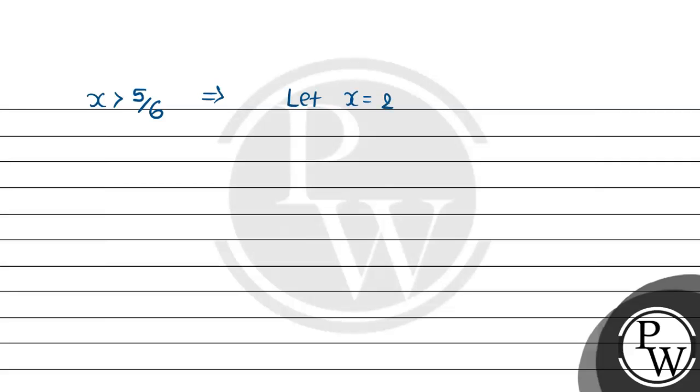Our equation will be 6 into 2 minus 5 divided by 4 into 2 plus 1. That is 12 minus 5 divided by 8 plus 1, which equals 7 by 9. That is also greater than 0.